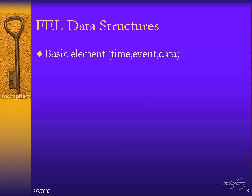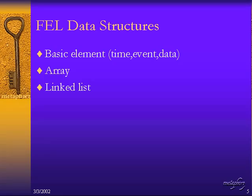Getting back to data structures — an array is probably one of the simplest types we could use for model execution. A linked list is the one most often shown in books because it has a nice visual representation, and it's how people would visualize a future event list, although the linked list is not necessarily the most efficient because insertion can be slow if the list is long. There's also the heap, which is a type of priority queue, and is very efficient for most simulation programs. You'll probably find the heap to be one of the most commonly implemented discrete event data structures.